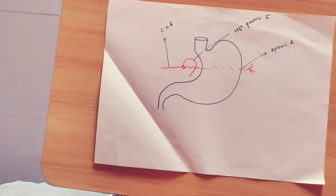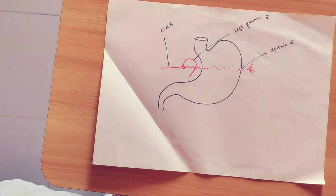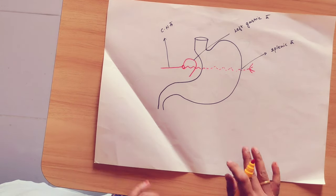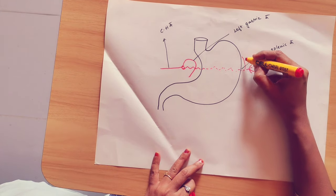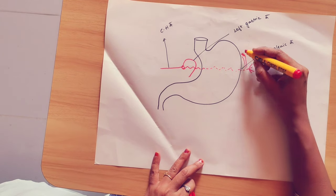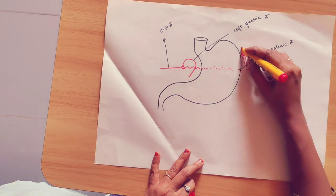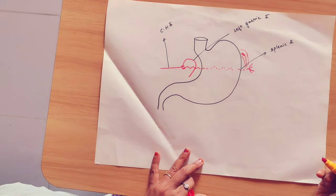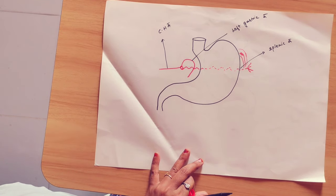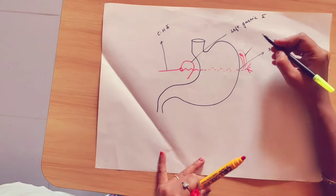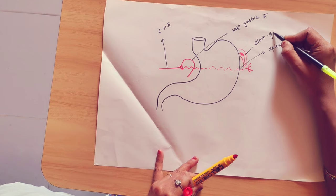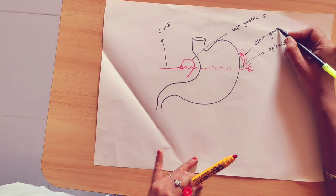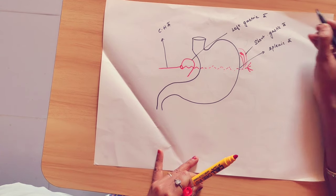In the splenic artery, there are branches — we call one of them the short gastric artery.